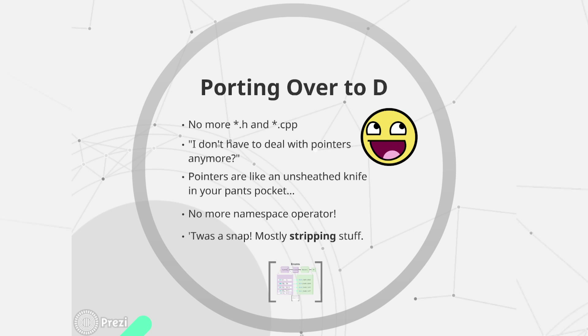Overall, the porting process actually wasn't so bad — it was mostly stripping stuff, to my surprise. I had maybe about 1,000 lines of code for the virtual machine and stripped it down to probably about 700 lines of code because D does a bunch of stuff for me.